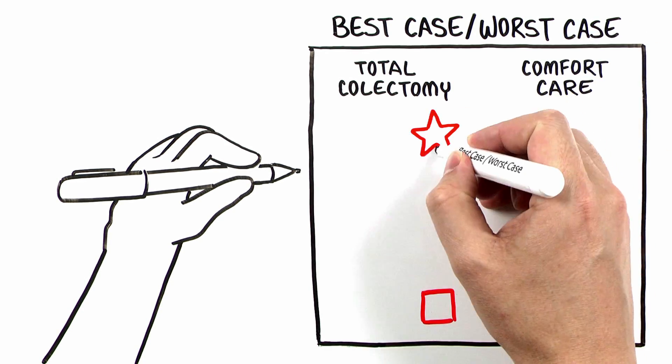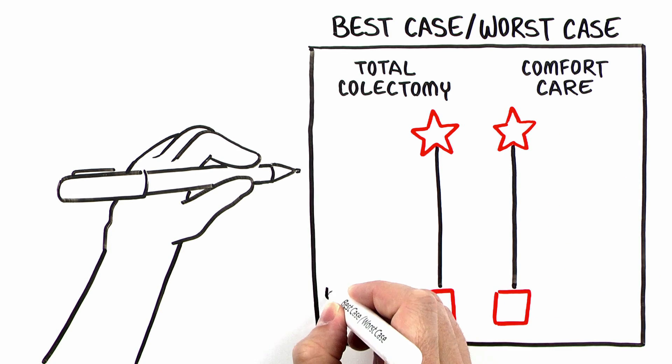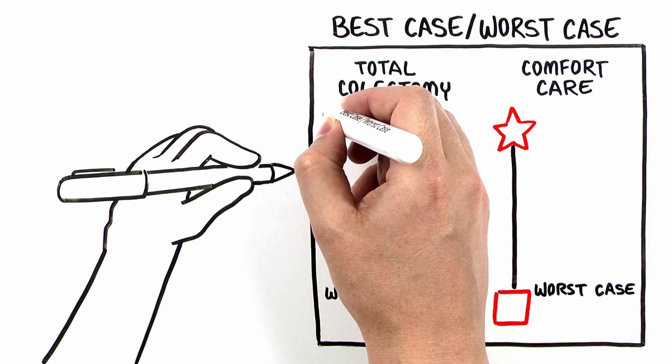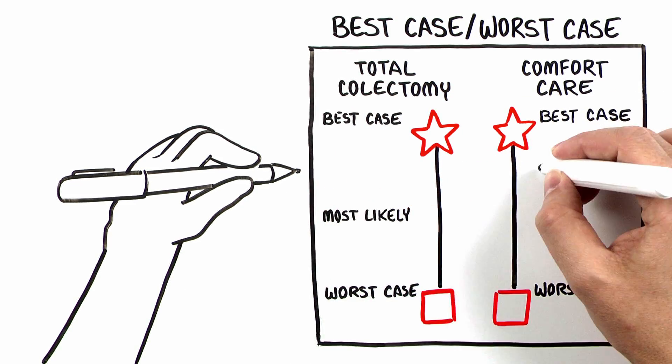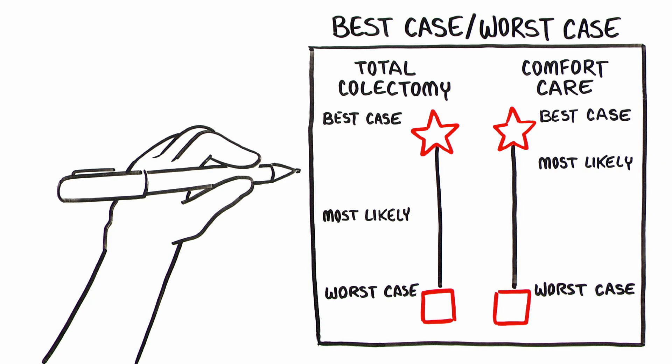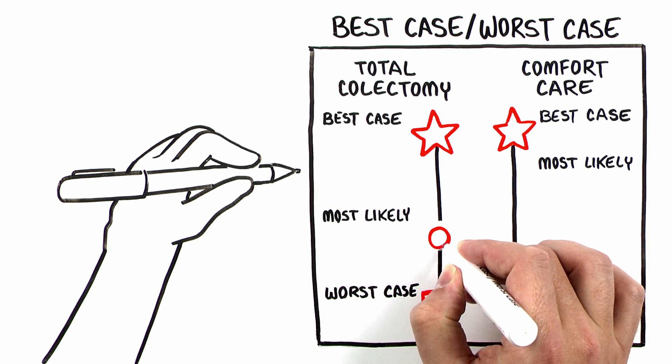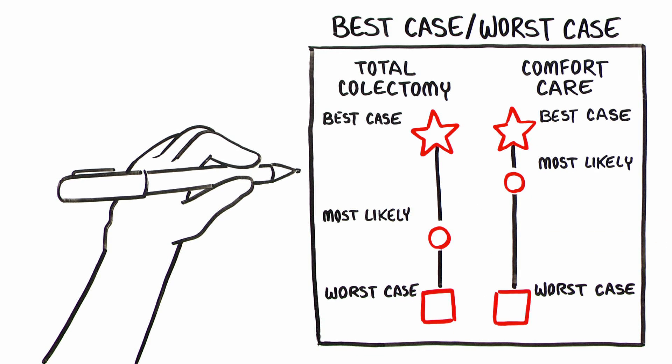For each option, draw a box and a star connected by a vertical line. The box represents the worst case outcome associated with a given treatment, and the star represents the best case outcome. Somewhere along this line lies the most likely outcome. Most likely may be close to or the same as the best case or worst case, or it could be somewhere in between. The idea is for you to combine your knowledge of the patient's overall health with your understanding of the current problem to give patients and families your best estimate of what is likely to happen.